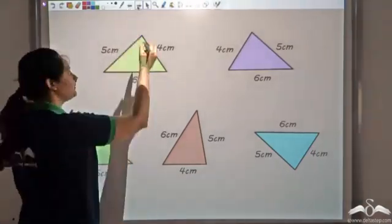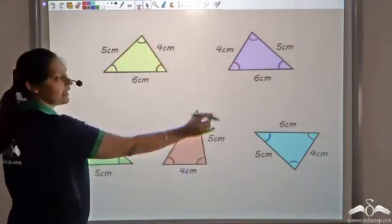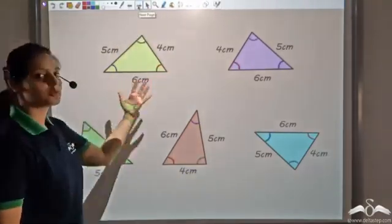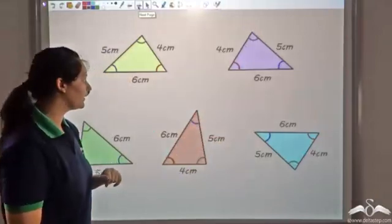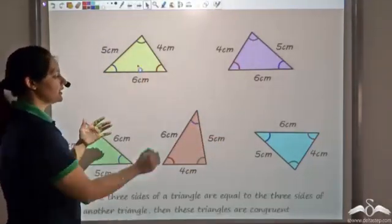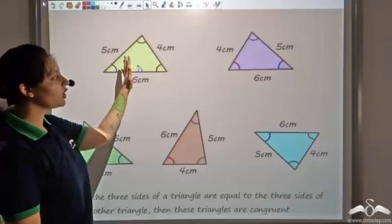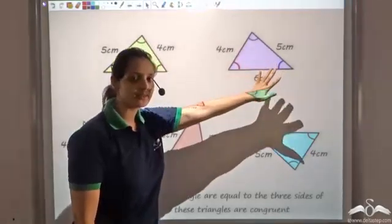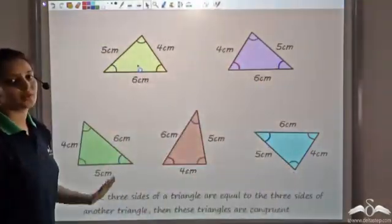But, just to verify, I measure all the angles and I see that the corresponding angles are also congruent. Hence, whenever I have three sides of one triangle equal to three sides of the other triangle, I can say that the triangles will be congruent.